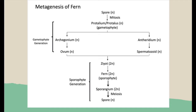Next, about the metagenesis of fern. The diagram is the same as the life cycle explained before. From the spore until the ovum and spermatozoid, the cells are haploid. From the zygote until the sporangium, the cells are diploid. From the prothallium until the ovum and sperm, the phase of life is the gametophyte generation. From the zygote until the spore, the phase is the sporophyte generation. We can conclude that the dominant life phase in fern is the sporophyte generation.